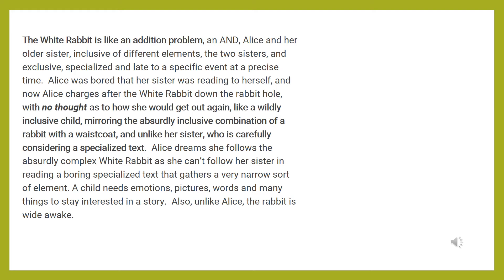The White Rabbit is like an addition problem — an AND. Alice and her older sister are inclusive of different elements: two sisters, exclusive and specialized, tied to a specific event at a precise time. Alice was bored that her sister was reading to herself, and now Alice charges after the White Rabbit down the rabbit hole with no thought as to how she would get out again. Like a wildly inclusive child, mirroring the absurdly inclusive combination of a rabbit with a waistcoat, Alice dreams she follows the complex White Rabbit, as she can't follow her sister in reading a boring specialized text. A child needs emotions, pictures, words and many things to stay interested in a story.